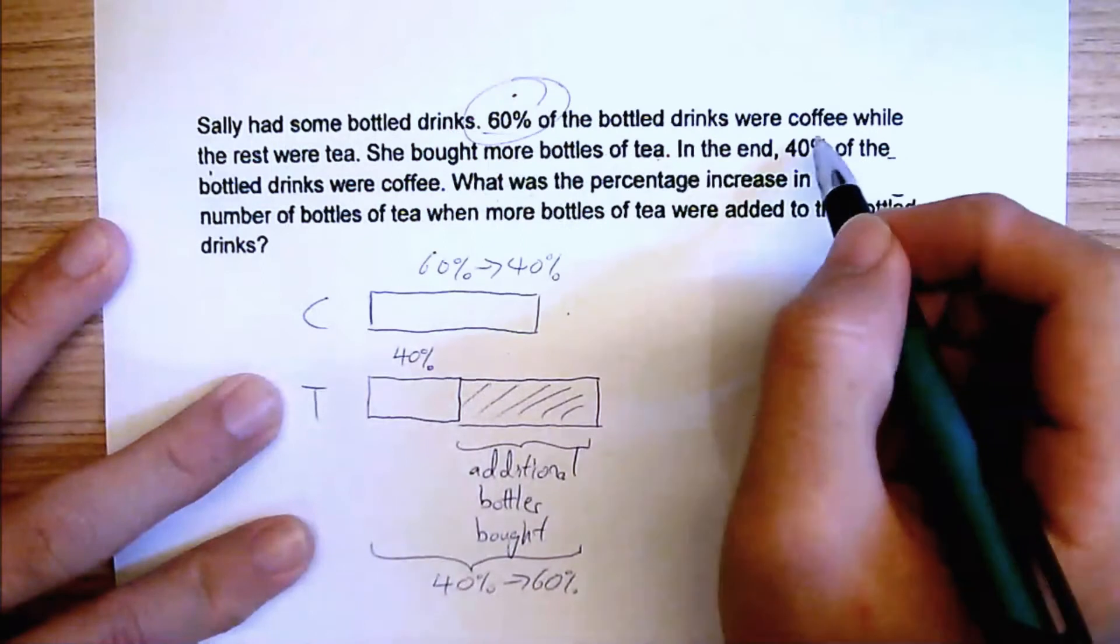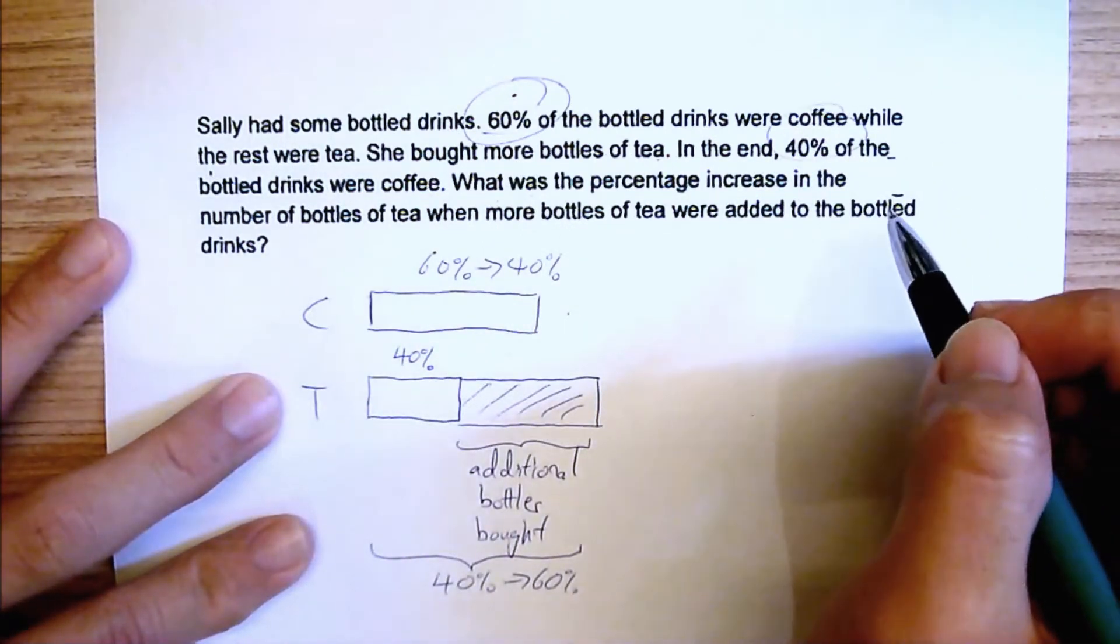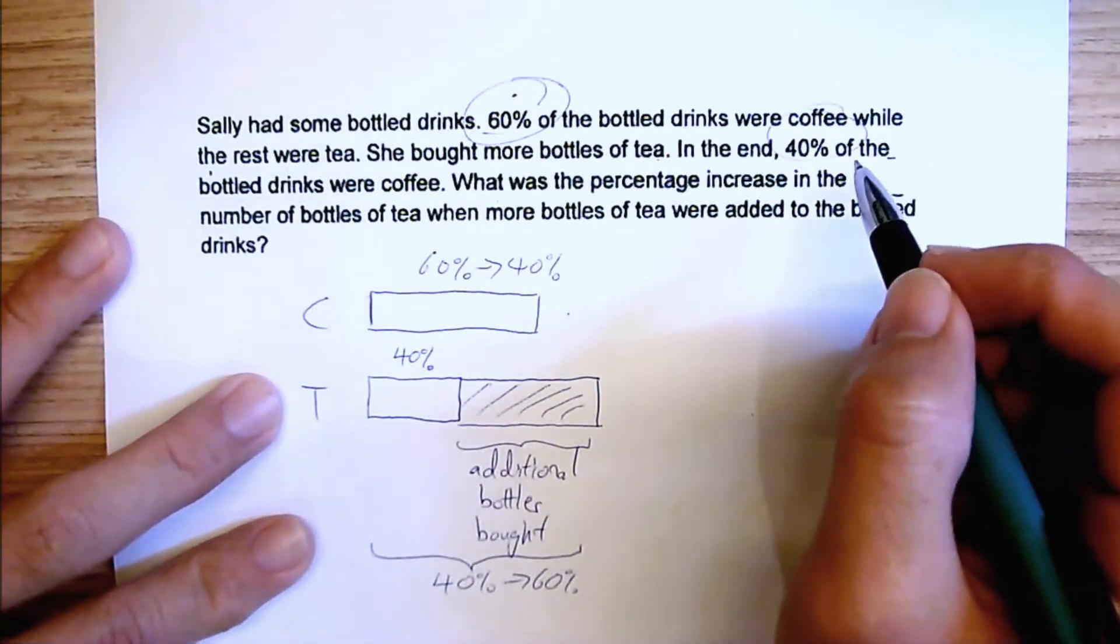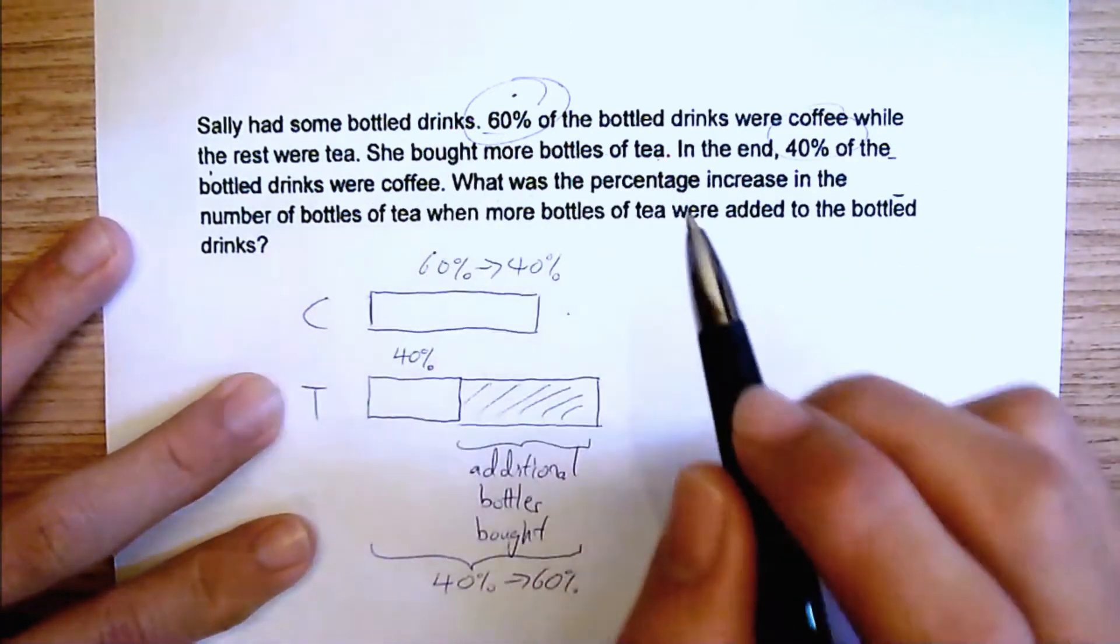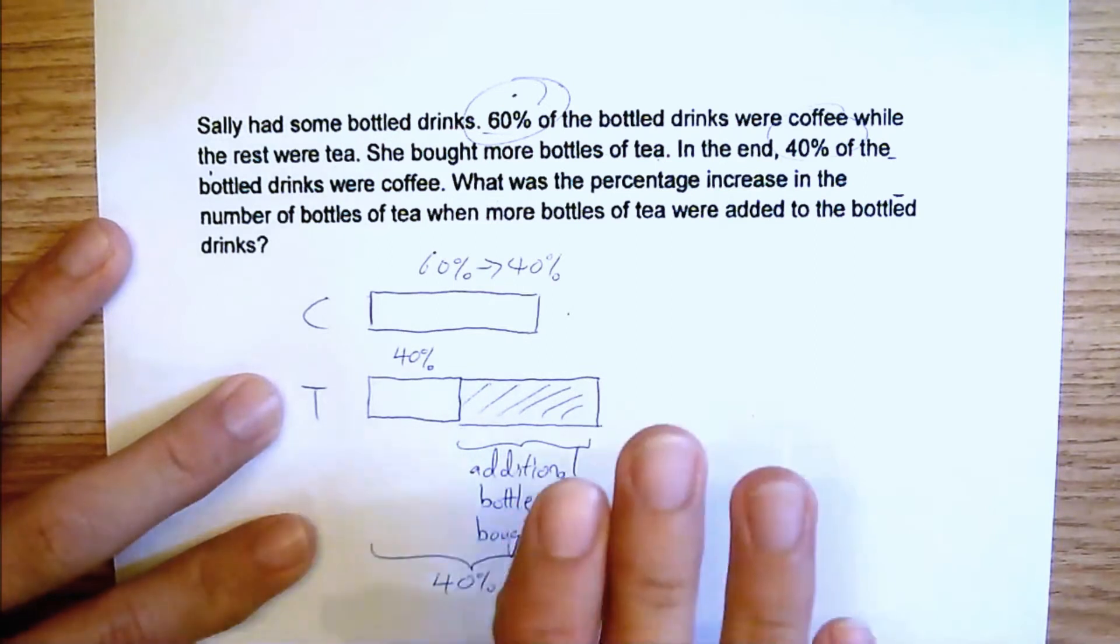Which means that they didn't give you the total number of, they didn't give you the bottle of coffee, they didn't give you the number of tea as well. What do you do at this point of time? Give yourself a figure.